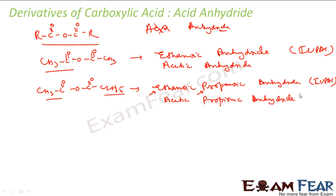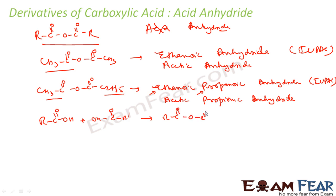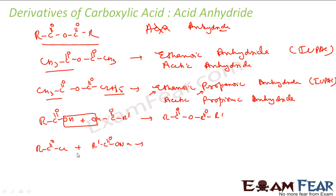The preparation of anhydride was explained in earlier slides: two carboxylic acids react with loss of a water molecule in the presence of some acid — RCOOH + R'COOH gives RCOO-COR' plus water. Anhydrides can also be prepared by the action of acid chloride on the sodium salt of an acid: RCOCL + RCOONa gives the anhydride, with NaCl as byproduct.